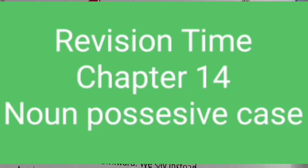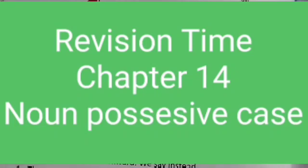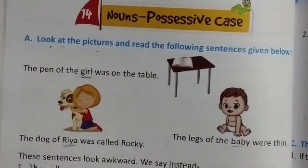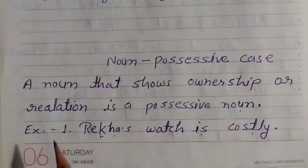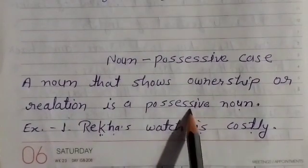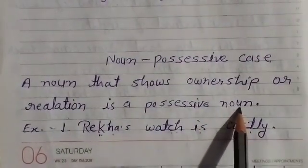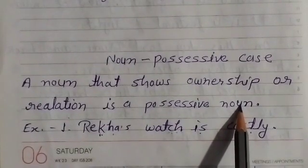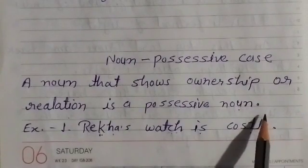Hello students, hope you are all doing well in revision time. Today we will start Chapter 14: Noun Possessive Case. A noun that shows ownership or relation is called a possessive noun. Noun kya show kerta hai — that shows ownership and relation batata hai, waha kya hai noun possessive case.